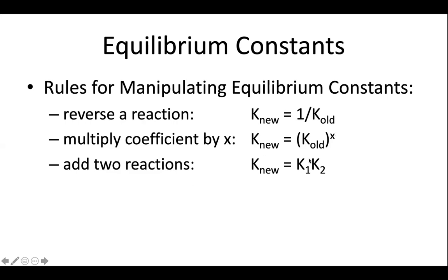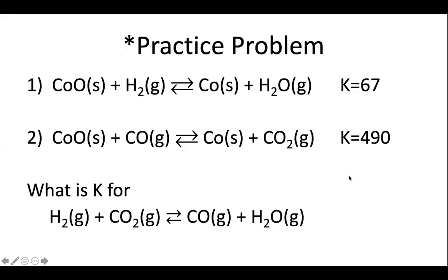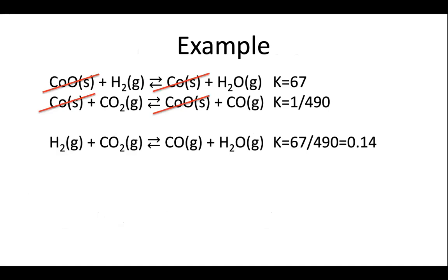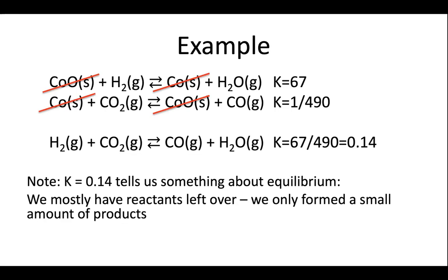And if we add two reactions, rather than directly adding them together, we're going to multiply the Ks. So those are our rules for equilibrium constants. Take a moment and find the equilibrium constant for this reaction using the equilibrium constants for these other two reactions. In order to get this, we're going to have to reverse the bottom reaction. When we reverse the bottom reaction, we're going to get one over 490. And when we add the reactions together, we multiply the Ks. So we'll end up getting 67 over 490 or 0.14 for our value of K. This tells us something about the equilibrium. Because we have such a small value for K, we know that the reactants here are favored over the products. And we'll end up with slightly more reactants than products at equilibrium.